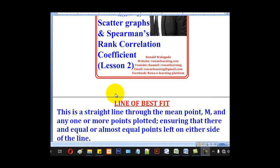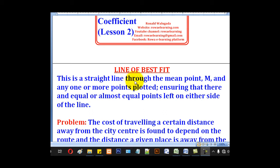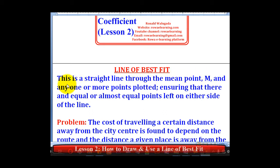So in today's lesson, you are going to look at the line of best fit. This is a straight line through the mean point, usually noted by capital M, and any one or more points plotted, ensuring that there are equal or almost equal points left on either side of the line.